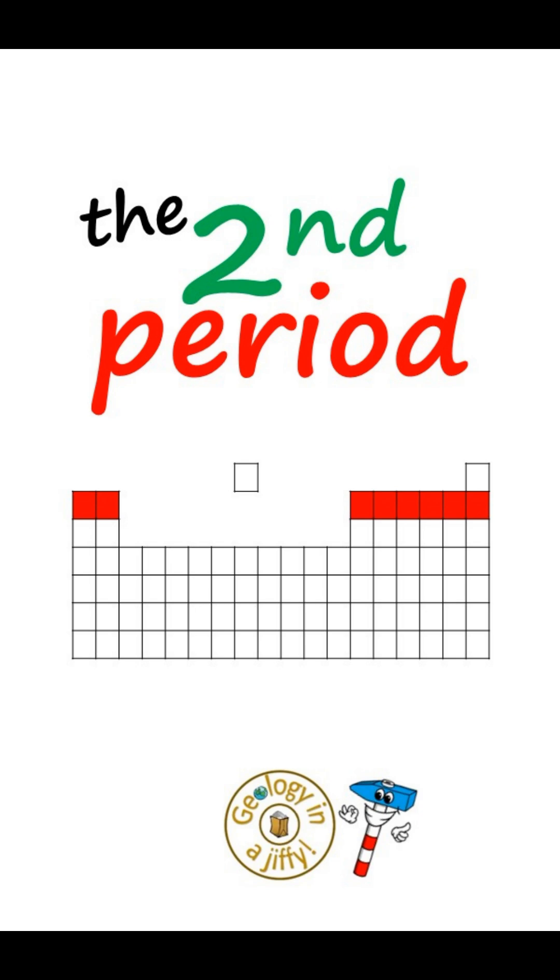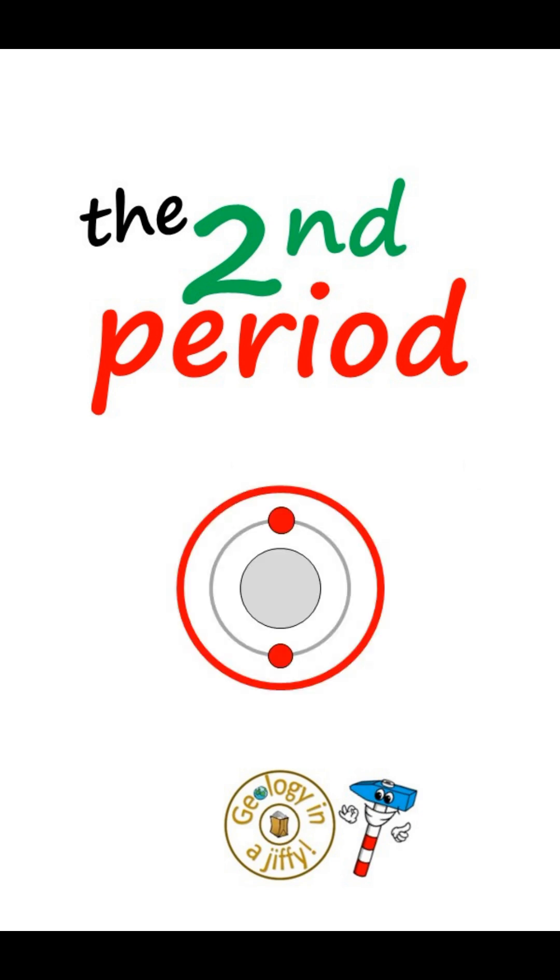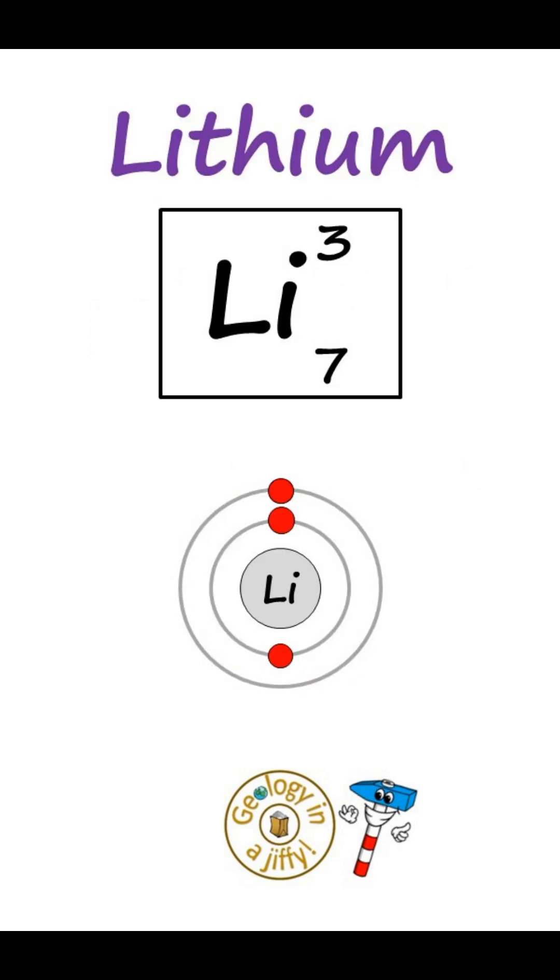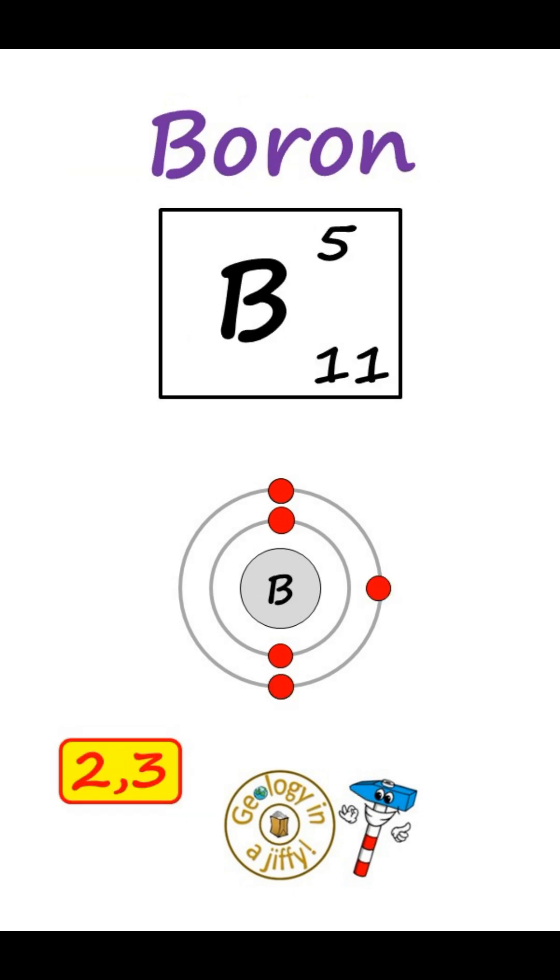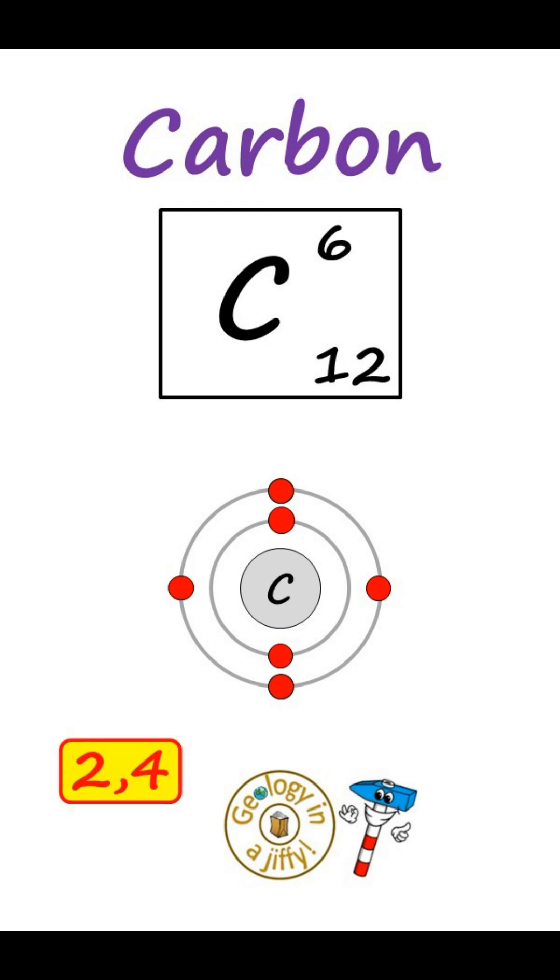The second period has the previous structure and another shell with lithium 2-1, beryllium 2-2, boron 2-3, carbon 2-4,